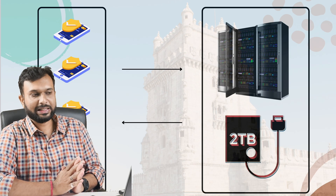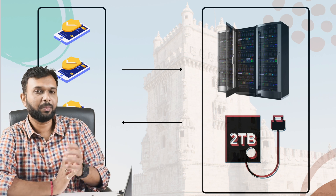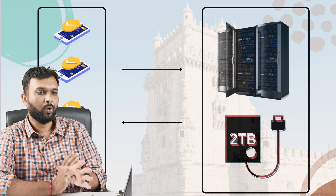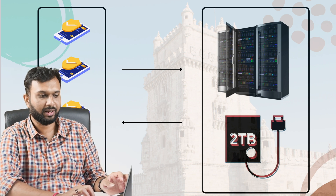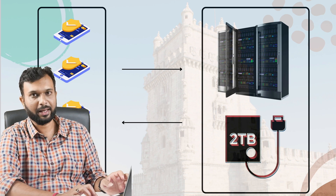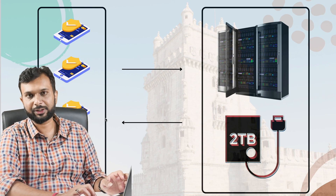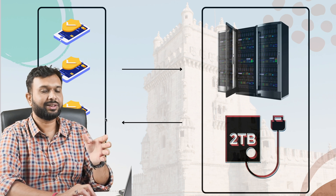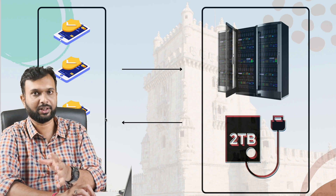Moving to the computer screen — after seeing this image, what do you basically understand? Here I'm making some API calls from one server to another server. This is basically the server and this is the database. I'm sending data and getting a response. This is how a basic application works.